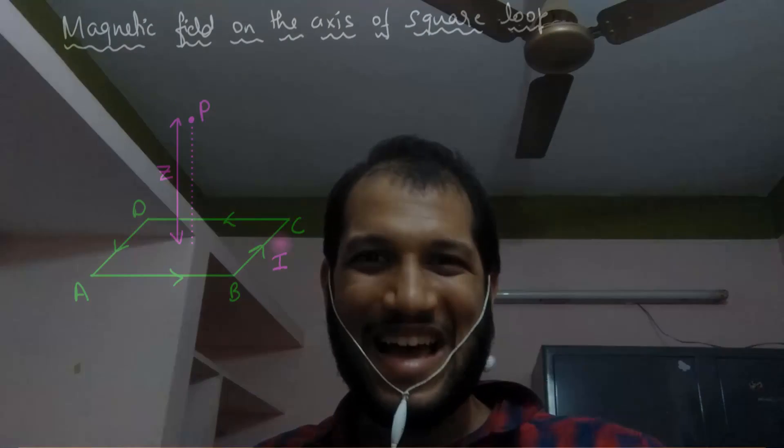Last time we looked at a problem where we had a square loop and calculated the magnetic field due to the current flowing in that loop right at the center. But this time we're going to do something more interesting and a little bit more difficult — we are going to recalculate the magnetic field due to the square loop, but not at the center, but at a point which lies on the axis of that square loop.